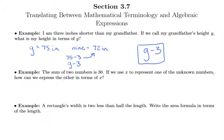Here's another one. The sum of two numbers is 30. If we use X to represent one of the unknown numbers, how can we express the other in terms of X? If you're having trouble understanding what the expression should look like, make up a fake number for X. Suppose that X equals 20.